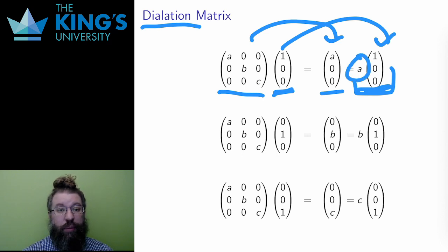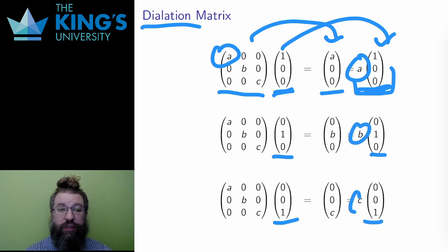The multiple is this number A, this dilation factor for the x-direction. In the same way, the y-axis vector is sent to B times itself, and the z-axis vector is sent to C times itself.